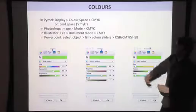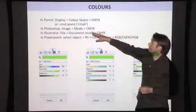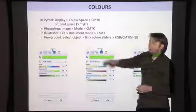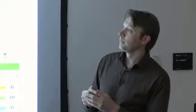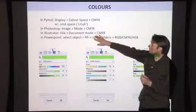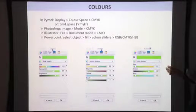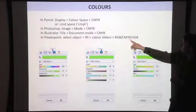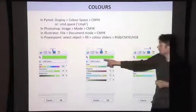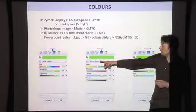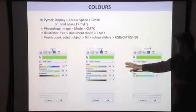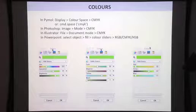In PyMOL you can choose display color space CMYK or type it in the command line. You can do it in Photoshop and Illustrator as well. In PowerPoint you don't set up the whole file in a mode, but you can choose different color sliders — HSB, CMYK, or RGB — which allows you to choose something more useful for your intended output.